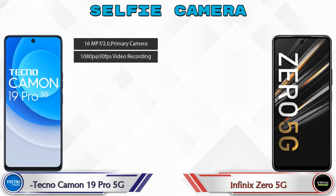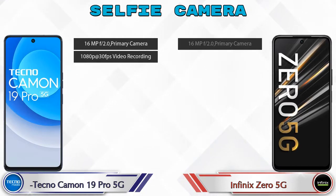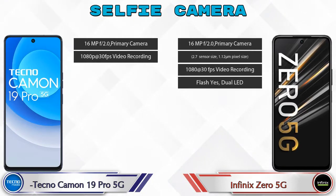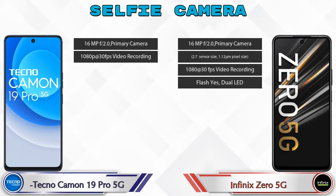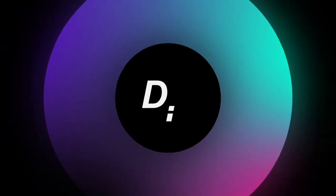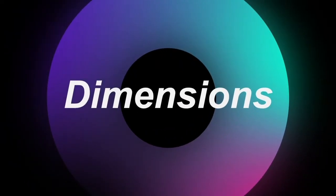For the front selfie camera, the Camon 19 Pro 5G has a single camera with two features available. The Zero 5G also has a single front camera but with four features available.